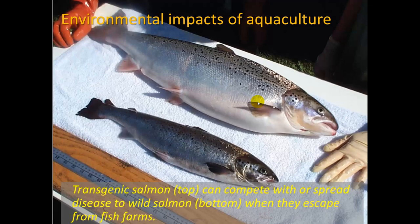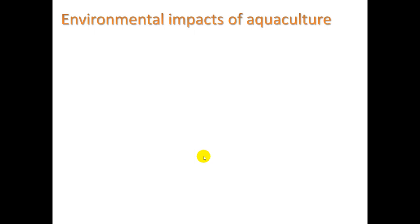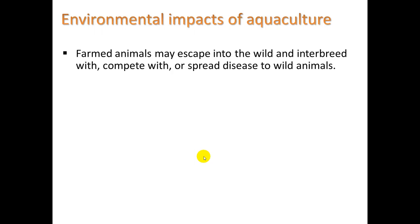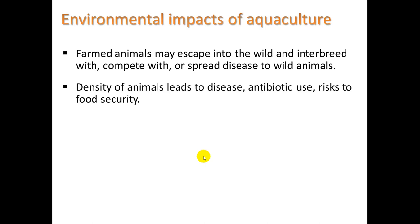However, there are environmental impacts. Here we see a transgenic salmon on top — a type of salmon that would be farm-raised. It can compete with or spread diseases to wild salmon on the bottom when they escape from fish farms, which is inevitable. Farmed animals may escape into the wild and interbreed with, compete with, or spread diseases to wild animals. The density of the animals can also lead to disease, antibiotic use to help control that disease, and risk to food security. It can generate large amounts of waste that can cause eutrophication.